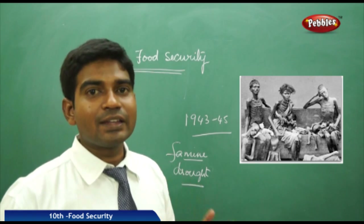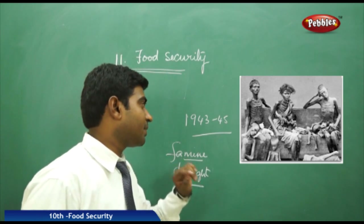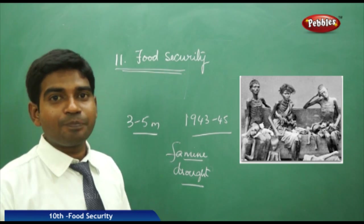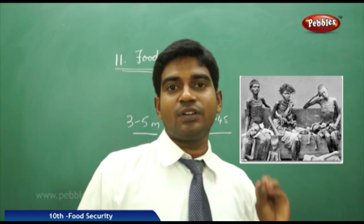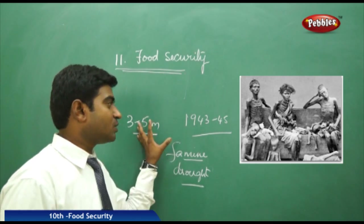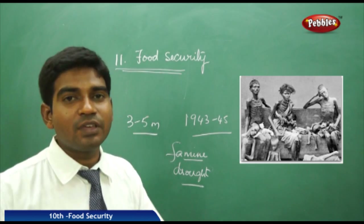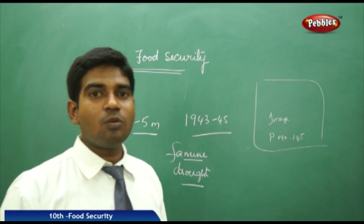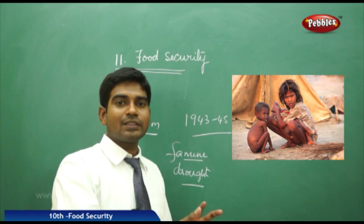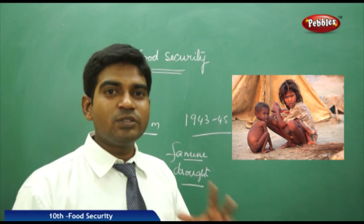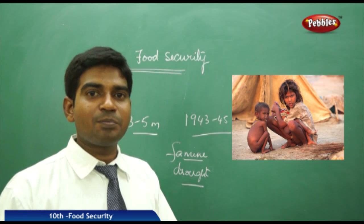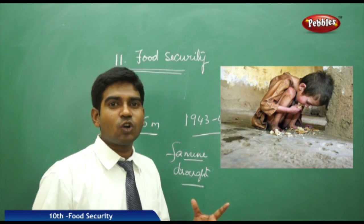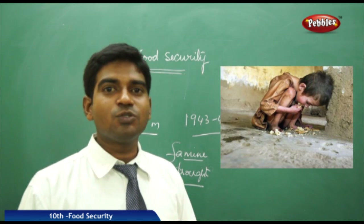If you look at the image here, we can see that in Bengal during the 1943–45 period, nearly three to five million people died due to lack of food. A small boy moved with his brothers and sisters to Kolkata in search of food. You can see people searching for grains, picking them up from the road, eating snakes, and consuming whatever they found. Earlier, these were rich farmers working on their lands.